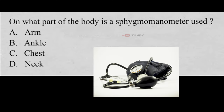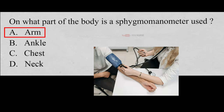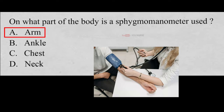On what part of the body is a sphygmomanometer used? A. Arm, B. Ankle, C. Chest, D. Neck. And the correct answer is A, Arm. A sphygmomanometer is an instrument for measuring blood pressure. It consists of an inflatable rubber cuff which is wrapped around the upper arm and is connected to an apparatus that records pressure.